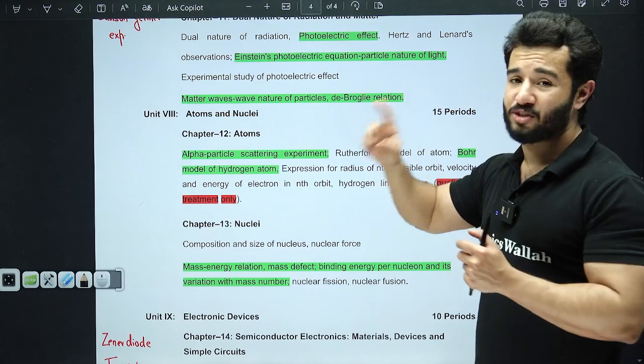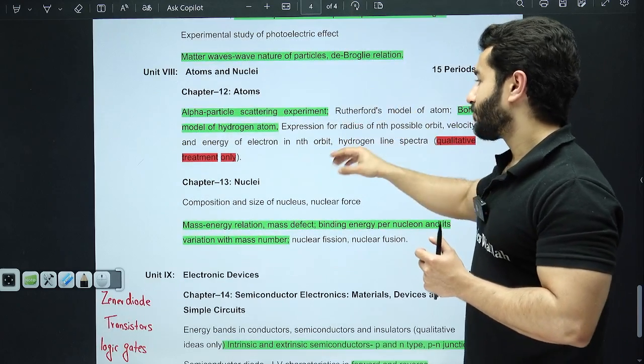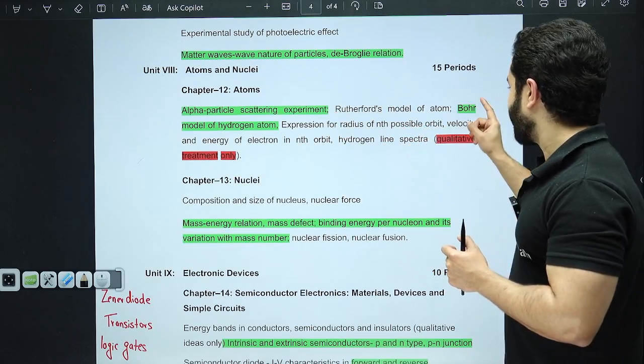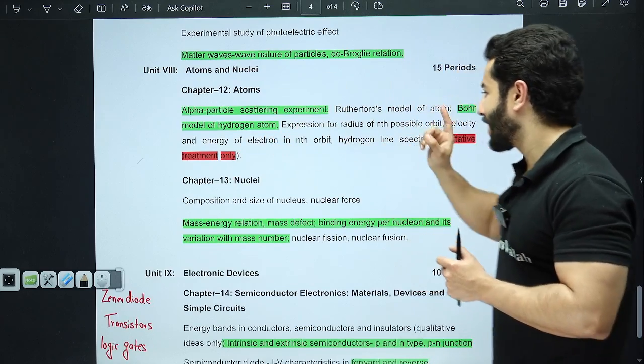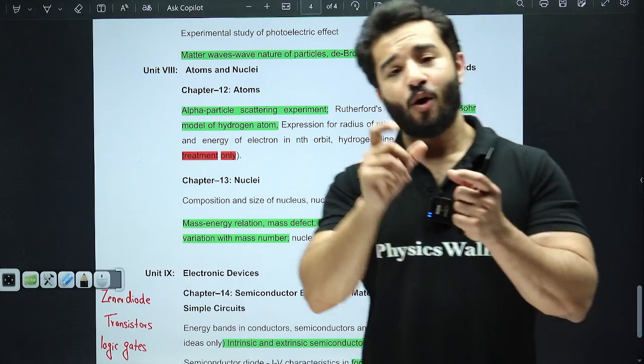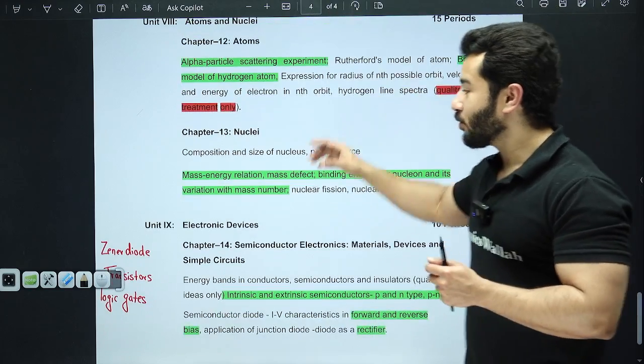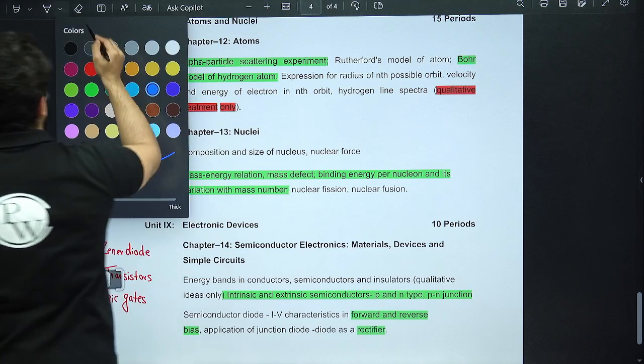Photoelectric effect will be asked—Einstein's photoelectric equation and particle—over here please first concentrate on the concept. If you are going to try to remember things, try to mug up things over here, you will actually face some problem. So first understand what Einstein effect says, then move to solving these questions. Then matter waves, wave nature of particles, de Broglie relation is very important. From atoms, alpha particle scattering experiment is important, Bohr model of hydrogen atom is important, and the hydrogen line spectra—only formula is going to be asked, so no derivation over here as well.